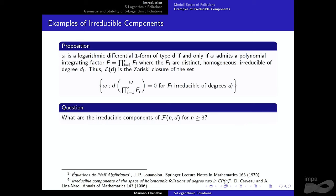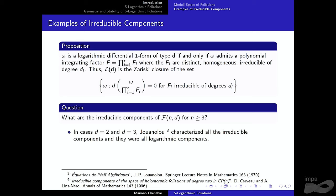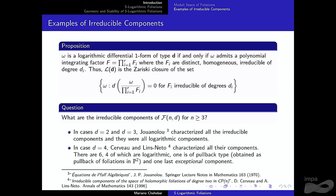For small degrees, the question of irreducible components has been answered. Jouanolou first characterized all irreducible components in degrees two and three — they were all logarithmic components. When there are two polynomials instead of r, they are called rational components, but it's the same thing. In a famous paper, Cerveau and Lins Neto characterized the components for d equals four.